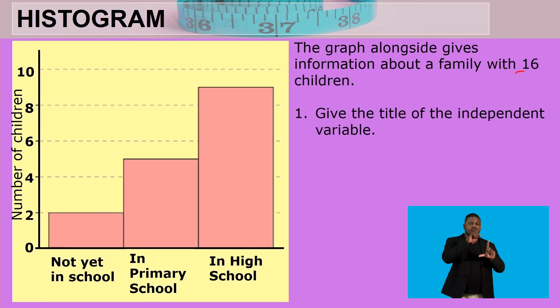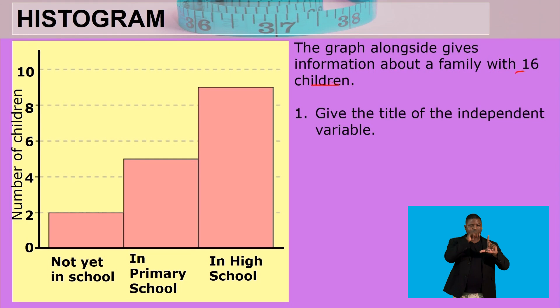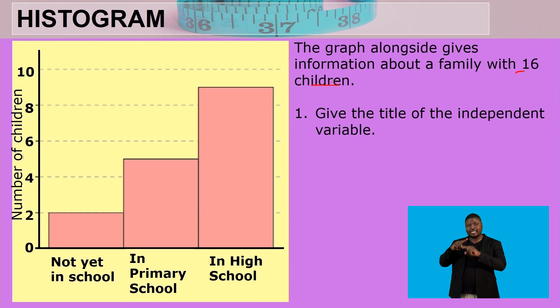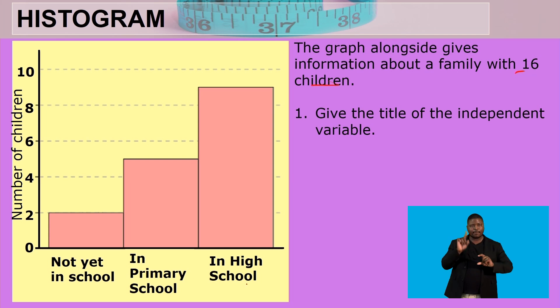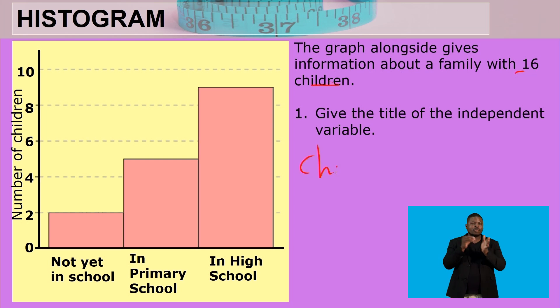The next question refers to a graph showing information about a family of 16 children. Question one asks for the title of the independent variable. In a graph, the dependent variable is on the y-axis and the independent variable is on the x-axis. The x-axis parameters describe children not yet in school, children in primary school, and children in high school.